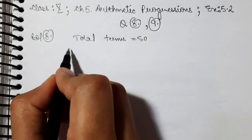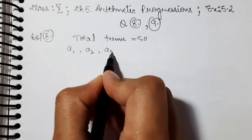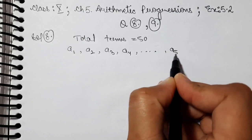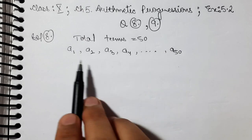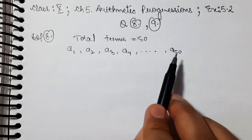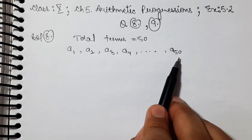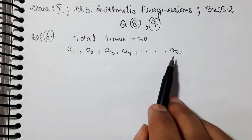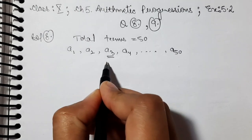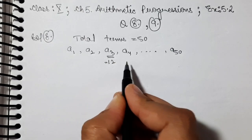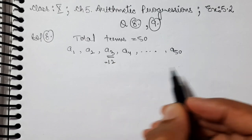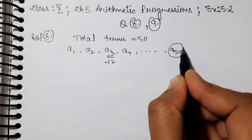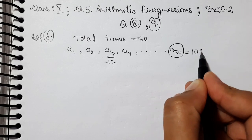50 total terms means if this is the first term, second term, third term, fourth term — we go all the way to the 50th term. So 50 are total terms. The 3rd term is given as 12, and the last term — which is the 50th term — is given as 106.